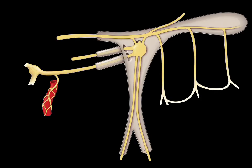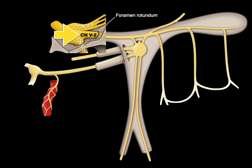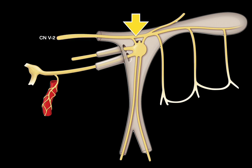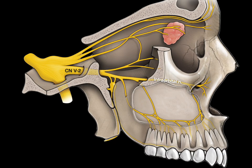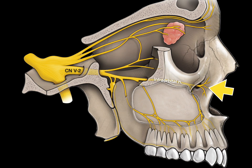There is the pterygopalatine fossa with all the nerves overlaid. There is V2, the maxillary branch of the trigeminal nerve, going through the foramen rotundum to enter the pterygopalatine fossa. In the schematic, you can see V1, V2, and V3 of the trigeminal nerve. V1 goes through the superior orbital fissure, V2 goes through the foramen rotundum and enters the pterygopalatine fossa, V3 goes through the foramen ovale and enters the infratemporal fossa. V2 continues to the floor of the orbit, which is why that branch is called the infraorbital nerve — infra meaning below the orbit. That branch of V2 traverses the roof of the pterygopalatine fossa as the infraorbital nerve and exits below the orbit.